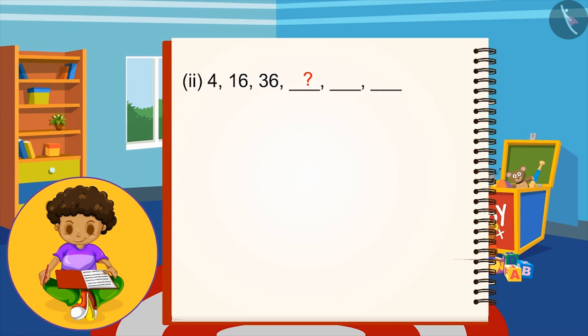To find the next number in this pattern, every even number is multiplied by itself. 2 times 2 is 4, 4 times 4 is 16, 6 times 6 is 36. Children, you can pause the video to find out the next number.